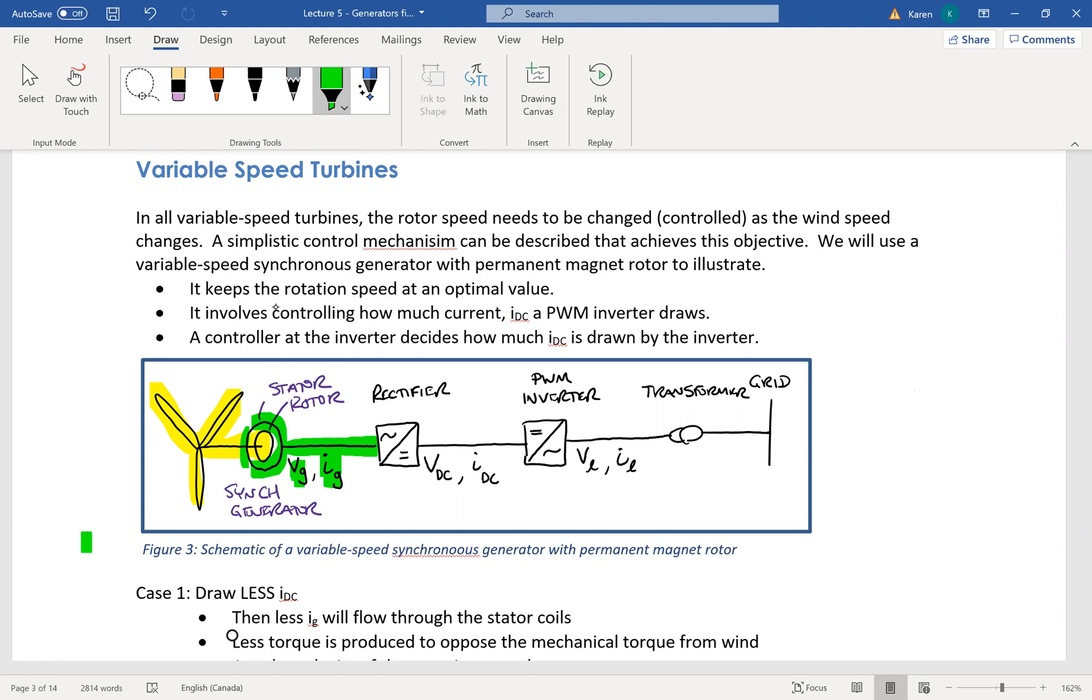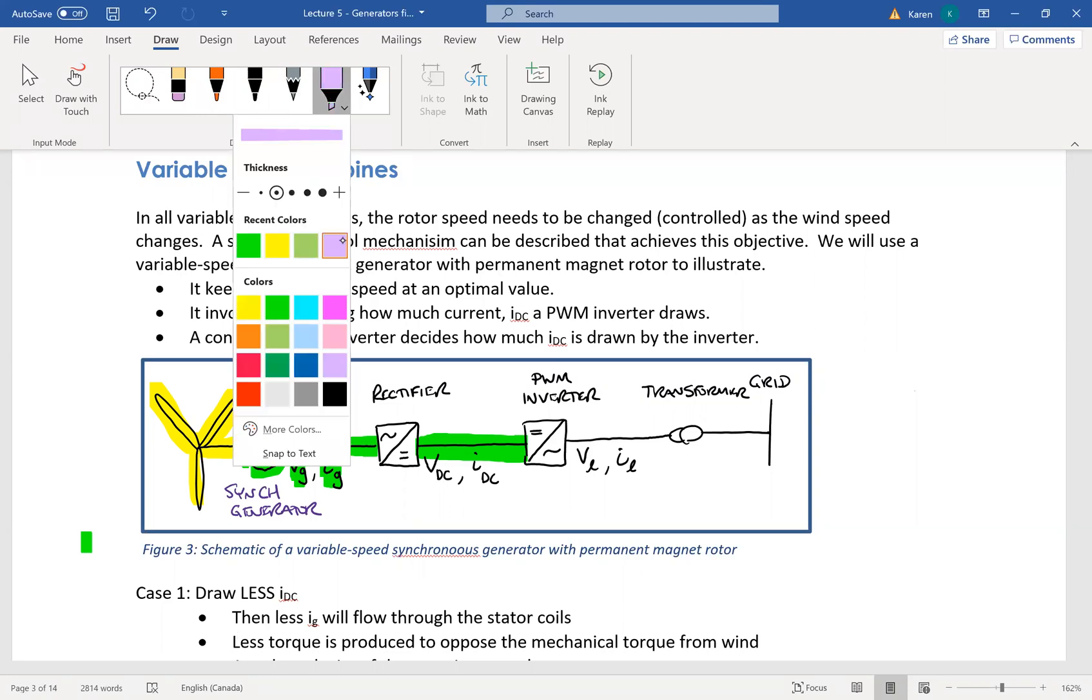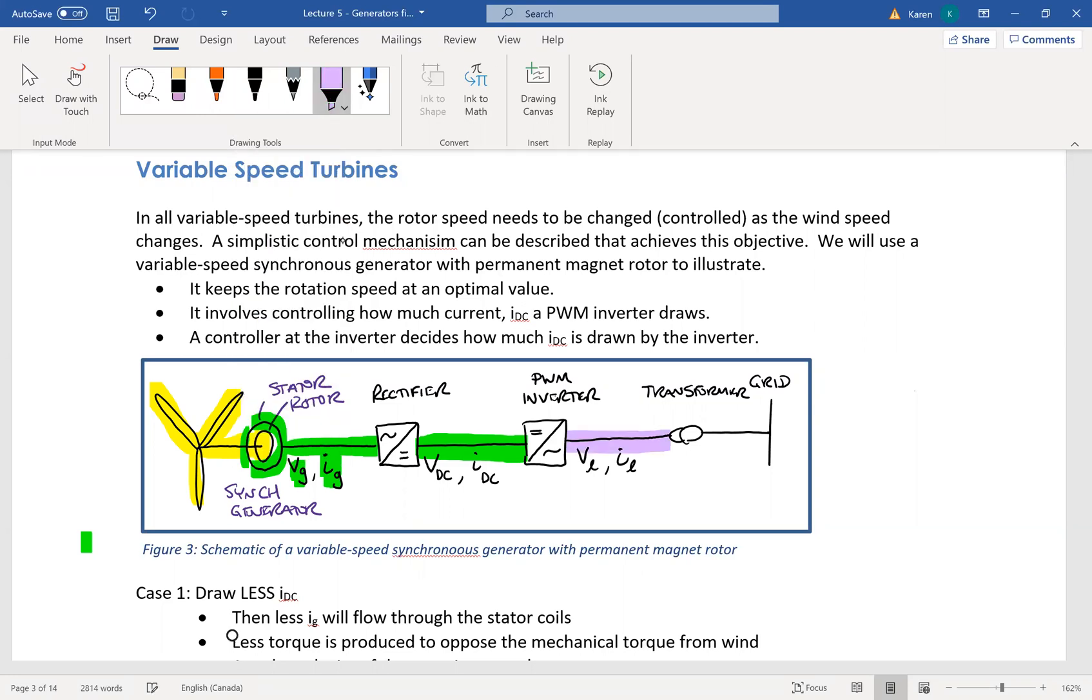That'll go through the rectifier, which just turns it to DC. So I'm going to highlight that green as well. Then of course, you need to go through an inverter and the inverter will then just invert the signal and then you've got the line voltage and current and onto your transformer and your grid.